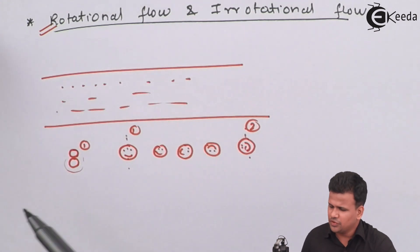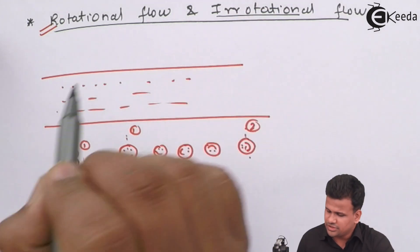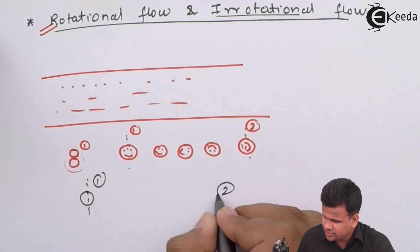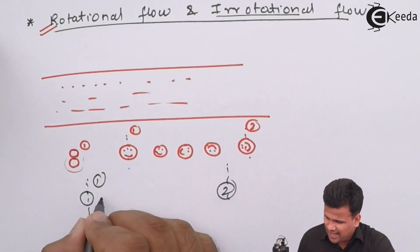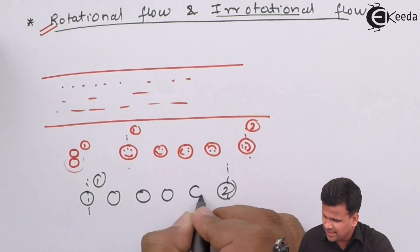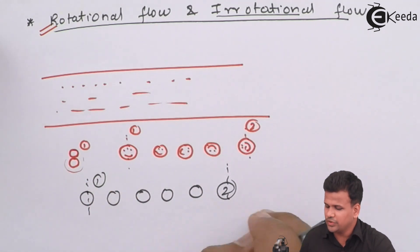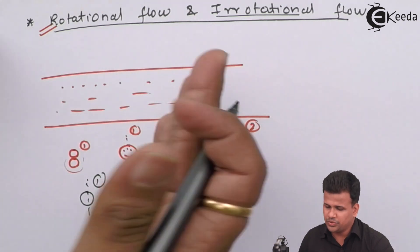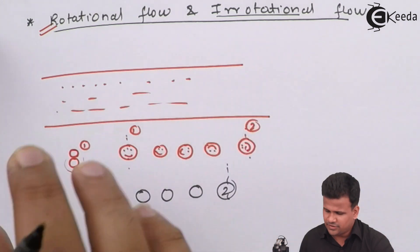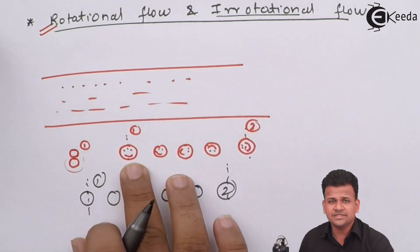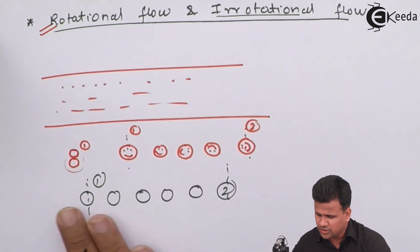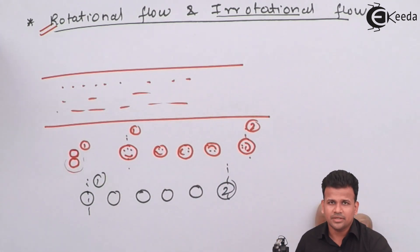For irrotational flow, the molecule will travel from one part of the fluid to the other as it is — there won't be any rotation of the fluid. In rotational flow the molecules rotate about their axis, whereas in irrotational flow the molecule travels only in a linear direction.